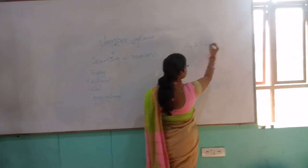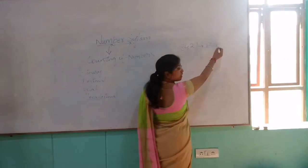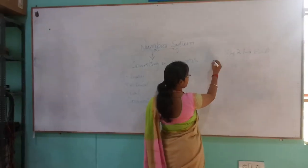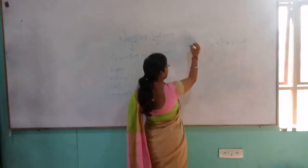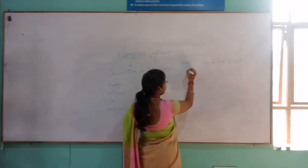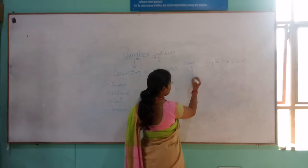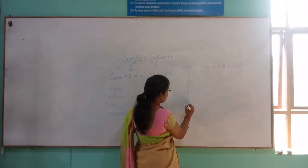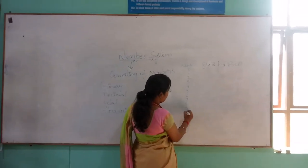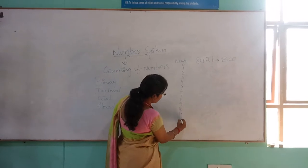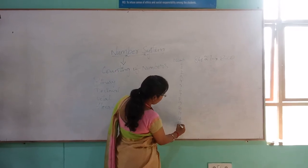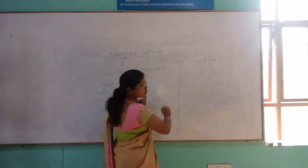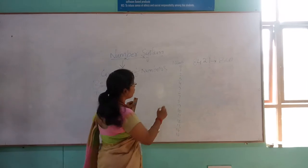This is nothing but BCD conversion. BCD conversion: first, we should take numbers like 0, 1, 2, 3, 4, 5, 6, 7, 8, 9, 10, 11, 12, 13, 14, and 15. These are the numbers which we have to know.